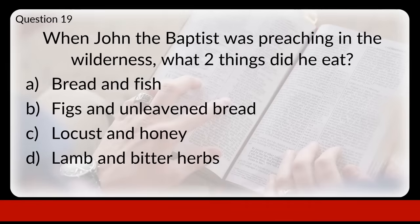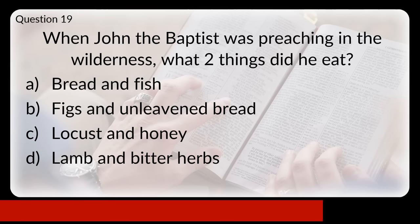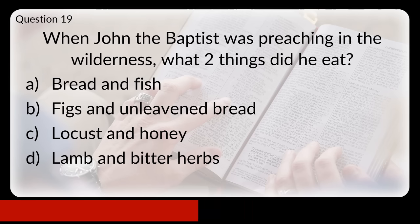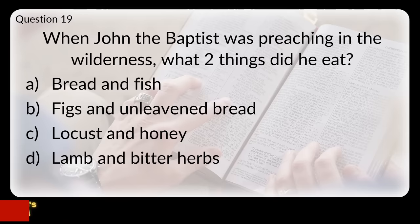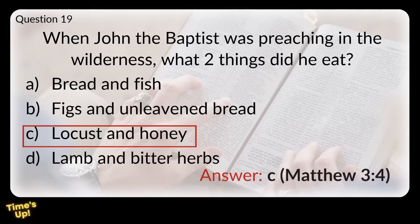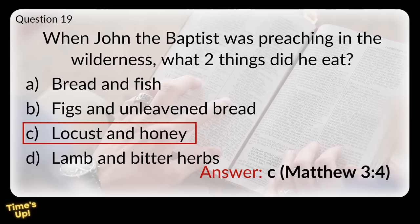Question nineteen: when John the Baptist was preaching in the wilderness, what two things did he eat? Was that bread and fish, figs and unleavened bread, locusts and honey, or lamb and bitter herbs? The answer was C, locusts and honey.